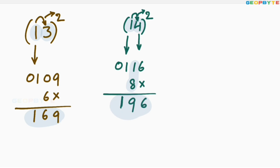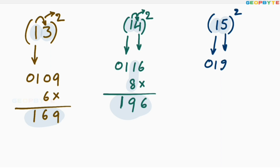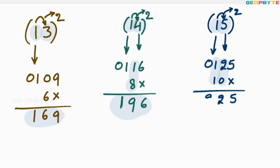I hope you are clearly following. Let us take the 15 square. Write the 1 square first: 01. And 5 square is 25. Then 1 into 5 is 5. Multiply with 2: 5 into 2 is 10. Leave the first space, write that 10 here. Add these two values: 5, 2 plus 0 is 2, 1 plus 1 is 2. Therefore, 15 square is equal to 225.